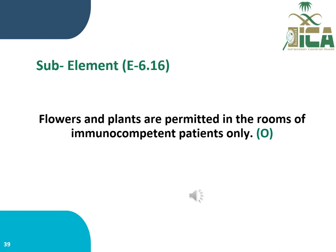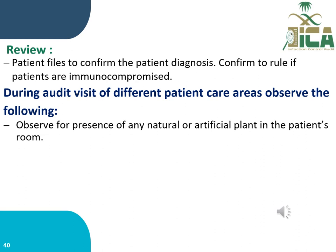Sub-element E6.16 states that flowers and plants are permitted in the rooms of immunocompetent patients only. This is evaluated through observation. During the audit visit, auditors review patient files to confirm diagnosis and rule out immunocompromised status, then observe whether any natural or artificial plants are present in patient rooms.